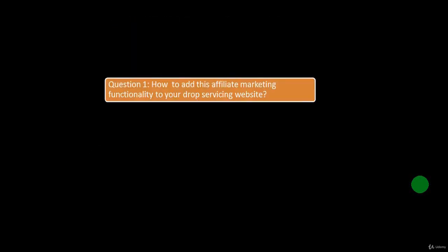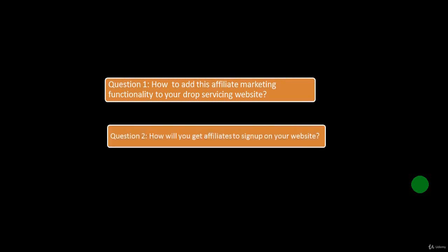There are two questions: how do you add affiliate marketing functionality to your drop servicing website, and how do you get affiliates to sign up? Adding the affiliate marketing system is very simple — you just install, activate, and configure a plugin on your WordPress website. Then you can recruit affiliates, track their traffic and sales automatically. Only in the beginning do you need to configure the plugin. We'll discuss this later in detail in this course.